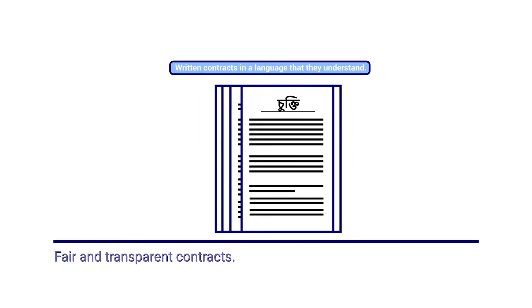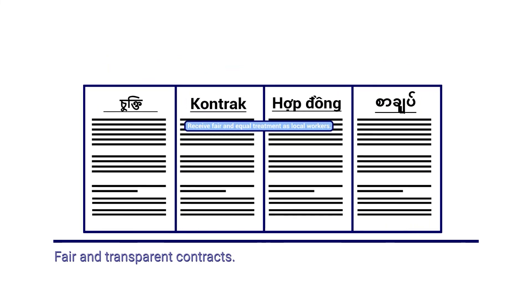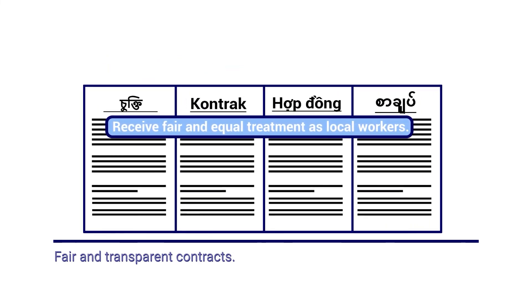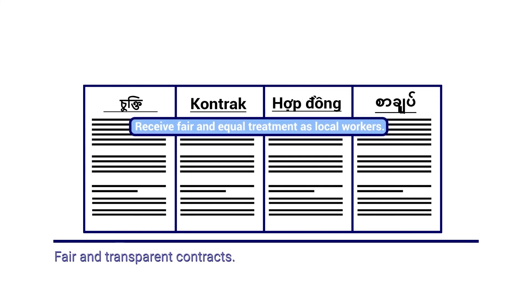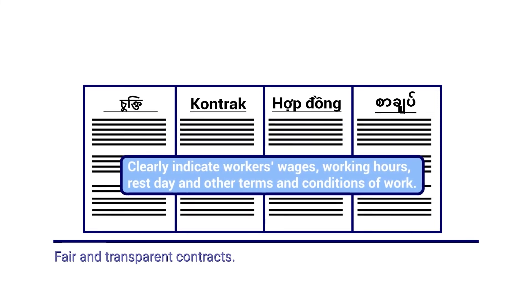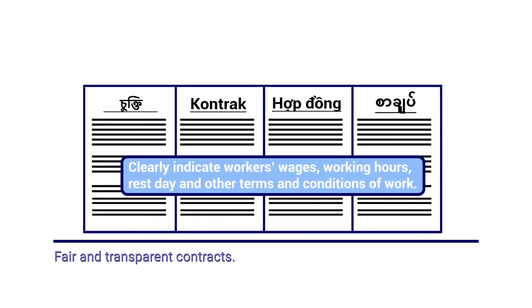Employers may provide fair and transparent employment contracts by providing written contracts to all workers in a language they understand, ensuring workers receive fair and equal treatment as local workers with similar contract terms and conditions, and clearly indicating in the contract the workers' wages, working hours, rest day, and other terms and conditions as per the Employment Act 1955.